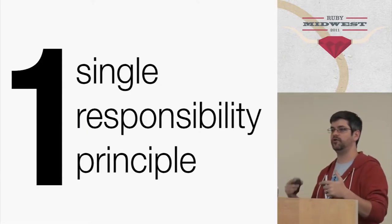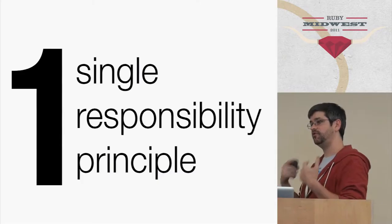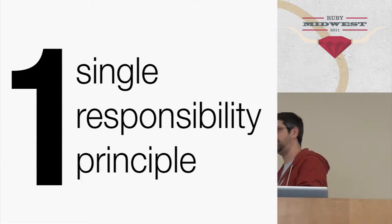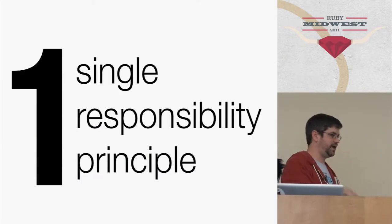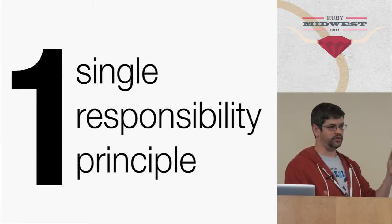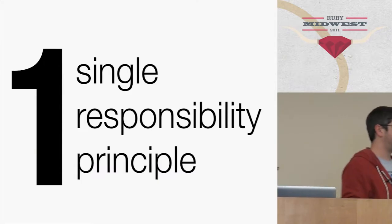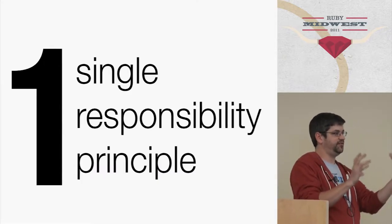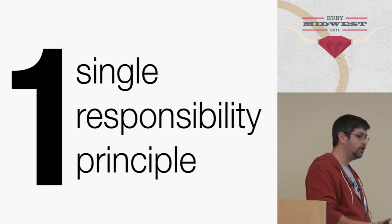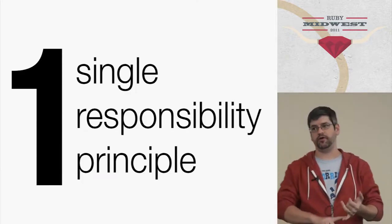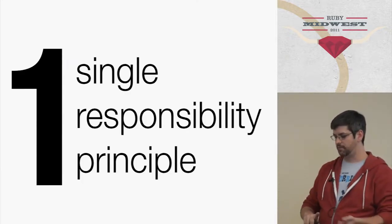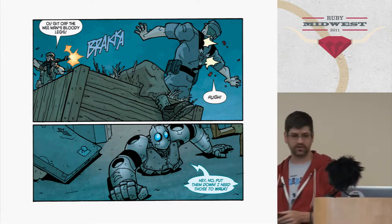Apps, just like other units of code, should do one thing. When you're talking about a method, the one thing is very small — a method might pluralize a string. A library might provide all kinds of inflections on strings. When you get to an app, it should still do one thing, but the thing is going to be bigger. So it might be authentication, semantic analysis, or any number of things. The key is to find that one thing. If your app does 50 different things, that's potentially 50 different apps.